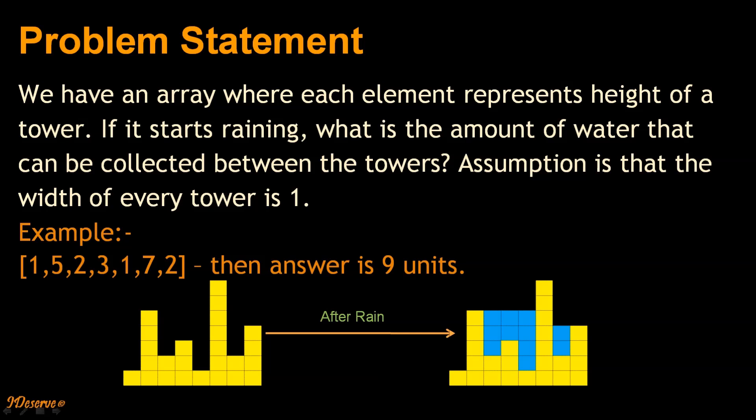Let us try to understand the problem with one example. So we have an array which represents heights of the towers. The values are [1,5,2,3,1,7,2]. So after the rain, we can easily verify that the answer for this problem would be 9 units.